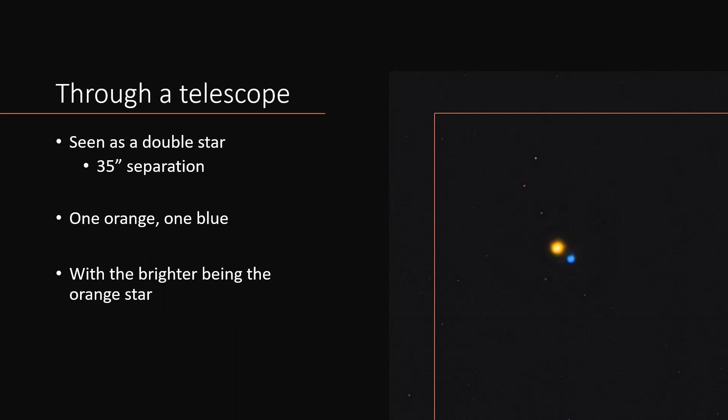It's an amazing color contrast double star. What you see is a single star turns out to be two, even with a modest telescope or a pair of binoculars, because the angular separation between the two components is about 35 arc seconds, really wide indeed.